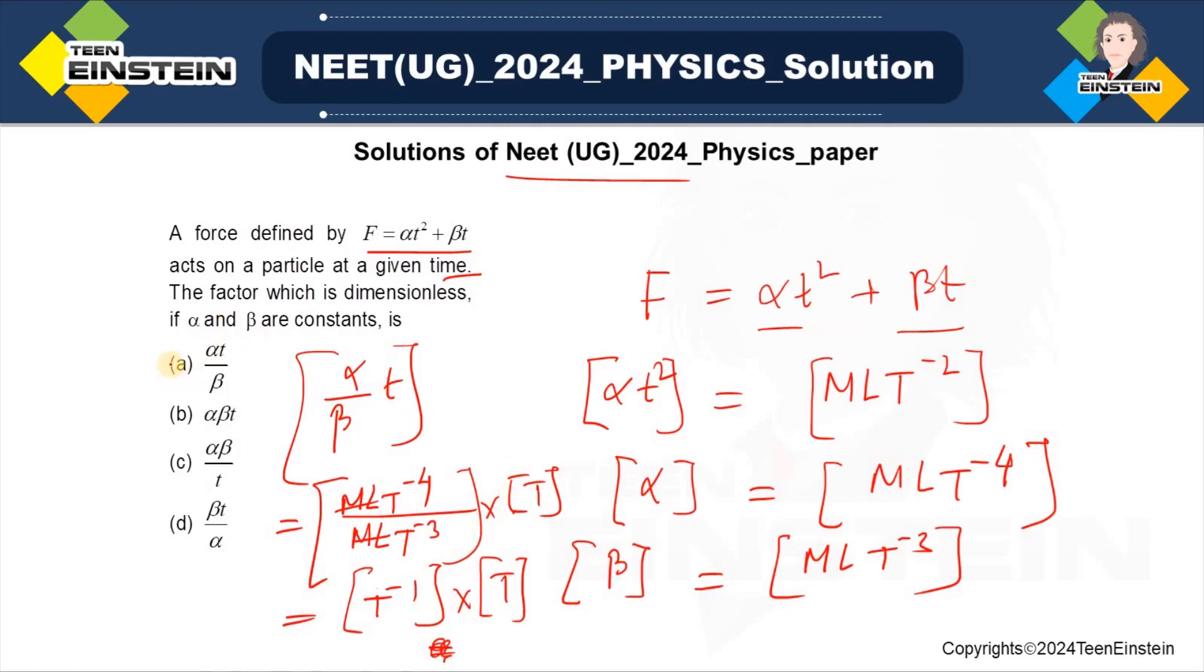So, the very first option itself will be a dimensionless quantity. You can cross-check with the other options by yourself, but this is the correct answer. Thank you.